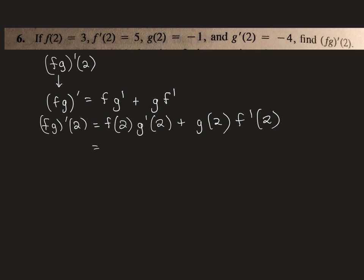So f at 2, they gave in the question, is 3. g prime at 2, that would be this one, negative 4. So that first term becomes 3 times negative 4. Plus, then g at 2 was given as negative 1, and f prime at 2 was given as 5, so that becomes negative 1 times 5.